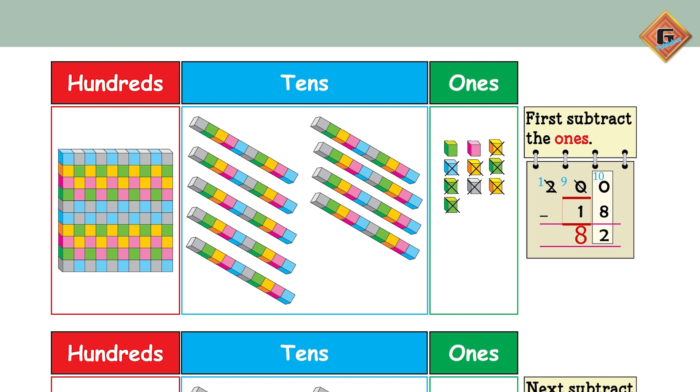And then in the hundreds, how many are left? From 200, there is only one left for us, and we write it as is. And what will our answer be? 182. Very good.